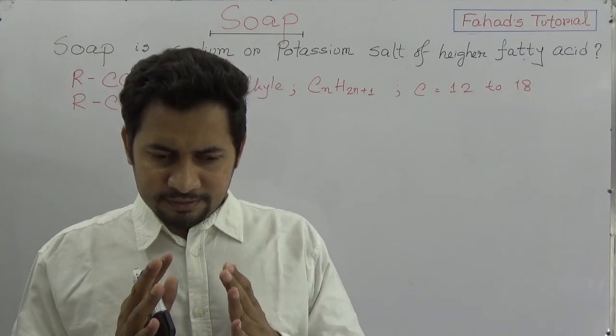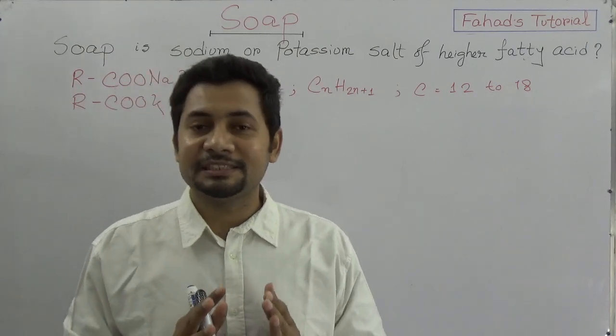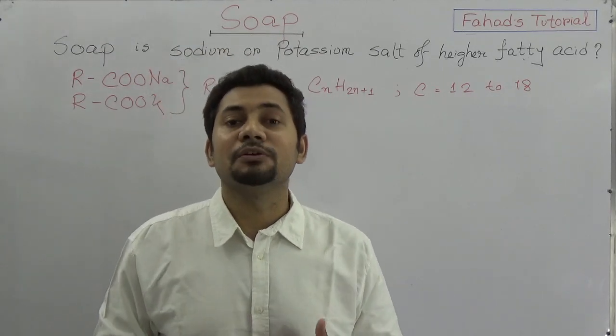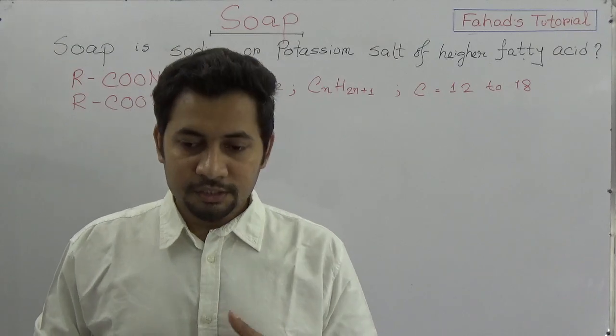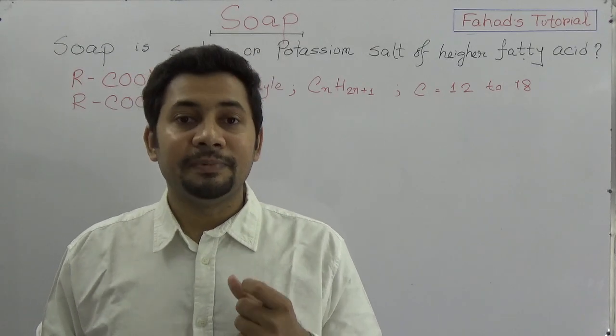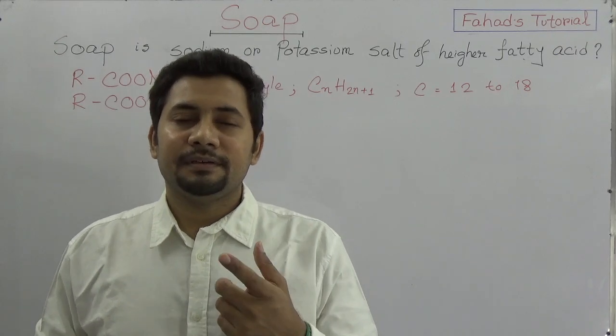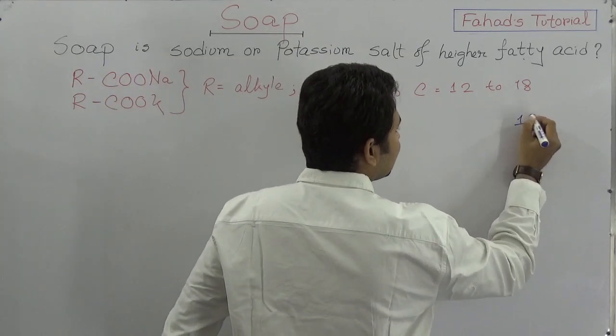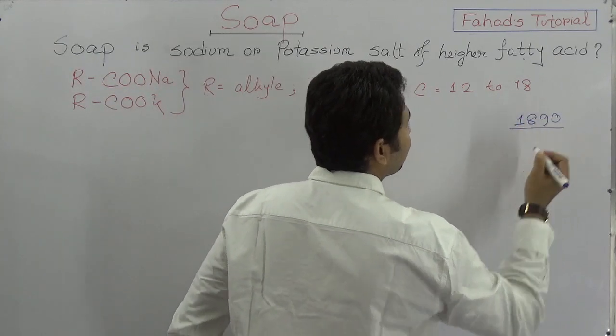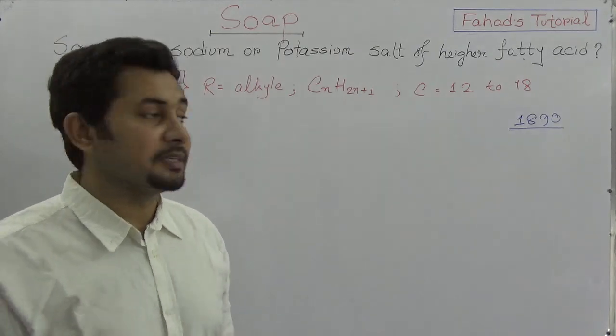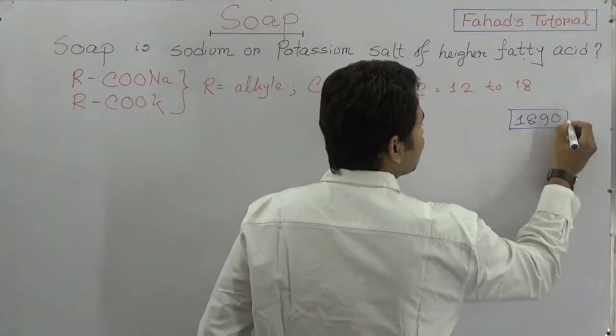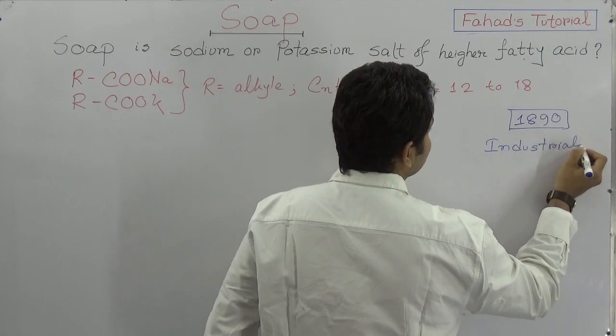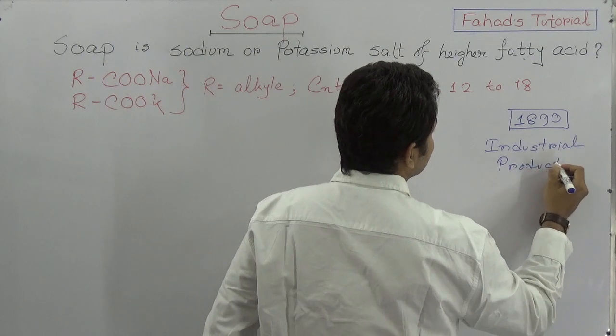The preparation procedure was similar. In the land of Ireland, they were using lye for producing soap. These lyes are actually alkaline solutions. In 1890, the industrial production of soap began. From 1890, industrial production has begun.